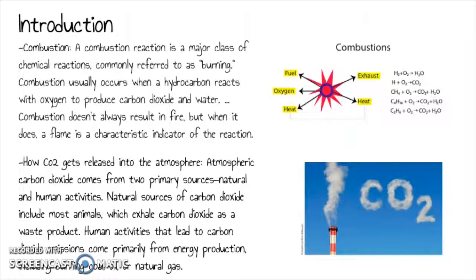This leads to CO2 being released into the atmosphere. Atmospheric carbon dioxide comes from two primary sources, which are natural activities and human activities. Natural sources of carbon dioxide include most animals, which exhale carbon dioxide as a waste product. However, human activities that lead to carbon dioxide emissions come primarily from energy production, including burning coal, oil, or natural gas.